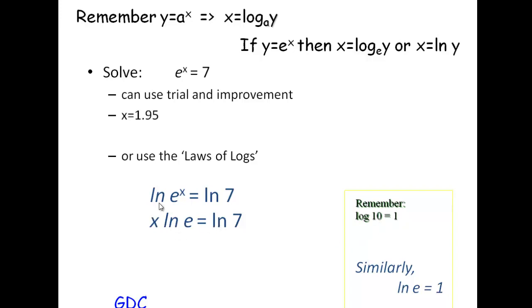Similarly here, log to the base e of e to the x is just going to be x, it's the power. So ln e equals 1 because log to the base e of e equals 1 because e to the 1 equals e in the same way as 10 to the 1 equals 10.